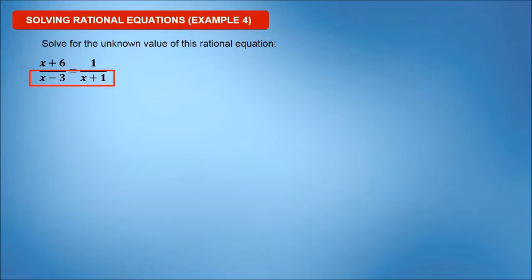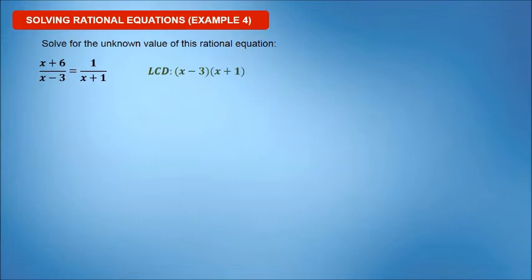The first step is to eliminate the denominator. Determine the least common denominator. The LCD is x minus 3, times x plus 1.